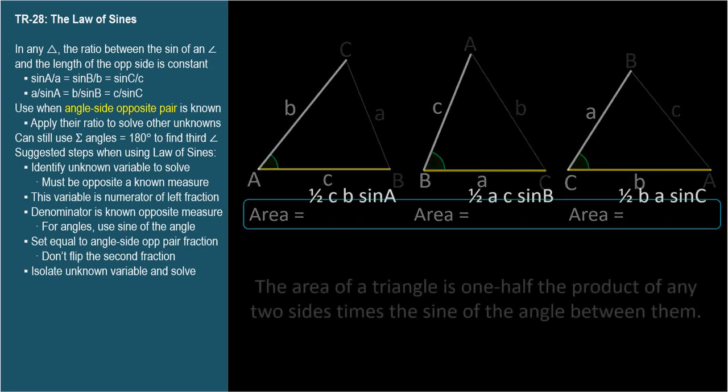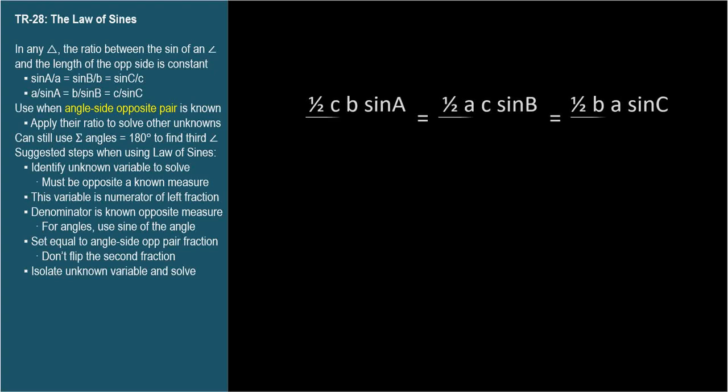So let's set them all equal to each other, and divide them all by one-half ABC. We get some nice cancellations. In the leftmost expression, the one-half cancels, the C's cancel, and the B's cancel, leaving us with sine of angle A over length of side A.